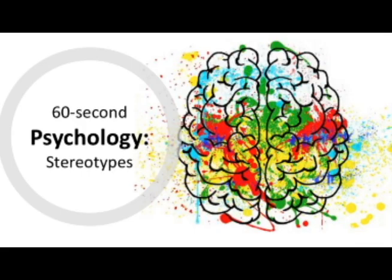Social categorisation is the way we group people based on similar characteristics such as their gender, race, age or the way they dress. It helps us to process information about people more quickly but it can lead to unfair assumptions. These are called stereotypes, the fixed views we have of individuals based on the social category we put them in.